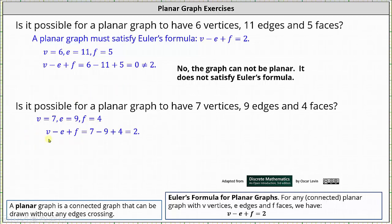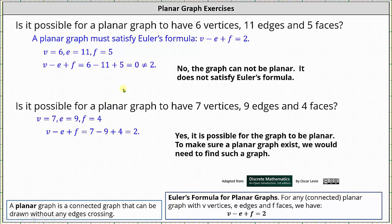Using Euler's formula, v minus e plus f is seven minus nine plus four, which in this case is equal to two. This indicates that yes, it is possible for the graph to be planar.